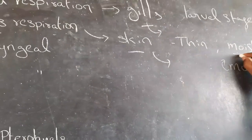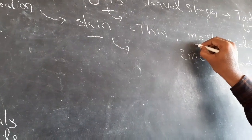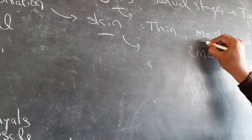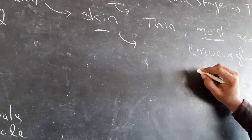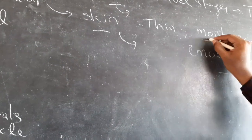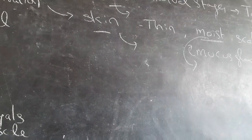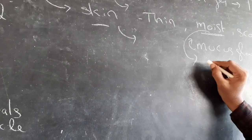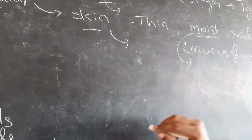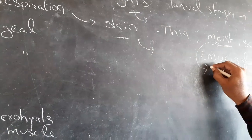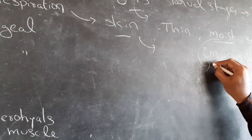When the skin is dried, the frog dies due to lack of oxygen, because cutaneous respiration is not possible.